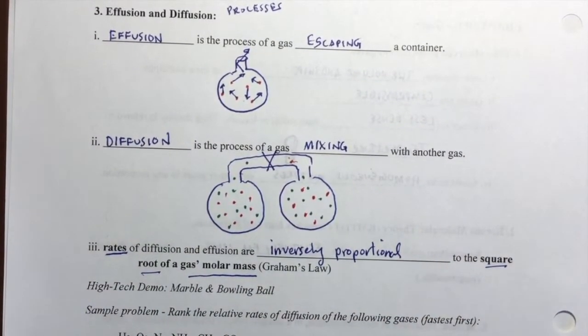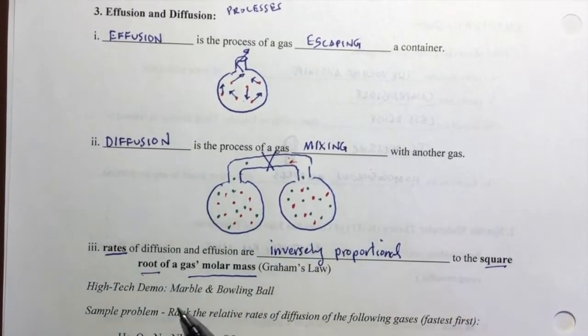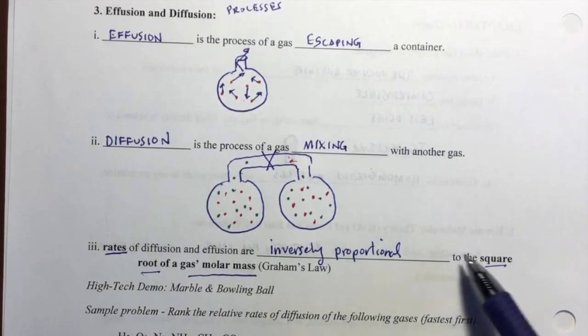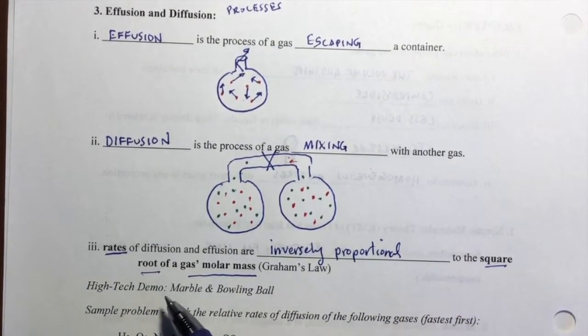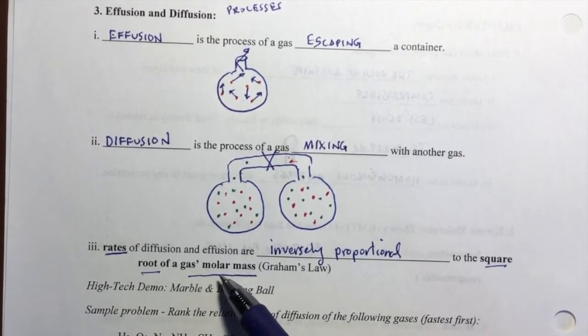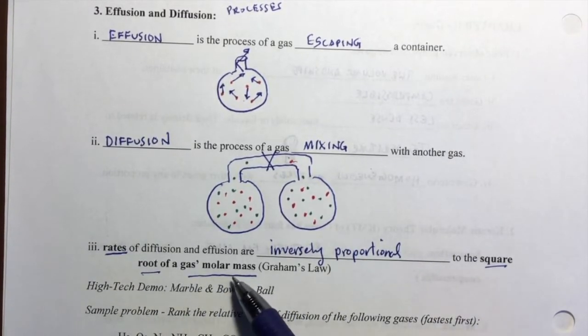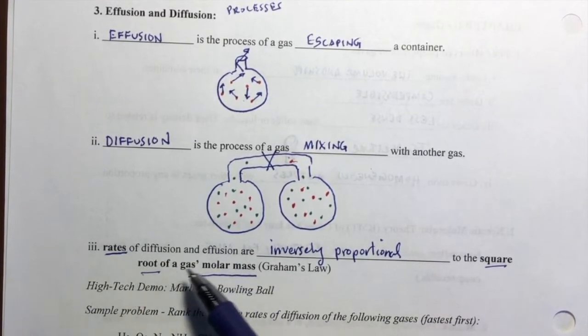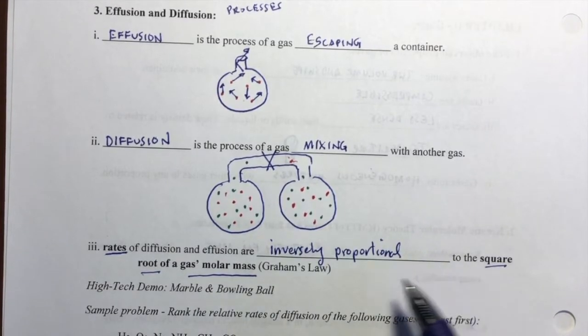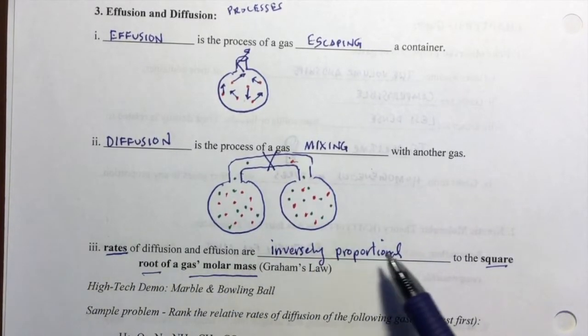And this is Graham's Law. It might be a little bit hard to parse that sentence: inversely proportional to the square root of the molar mass. So let's think about what this means. The heavier a gas molecule is, that is, the higher its molar mass, its square root of its mass is going to be a higher number, and the rate will be inversely proportional to that. So the rate of diffusion and effusion will be lower.